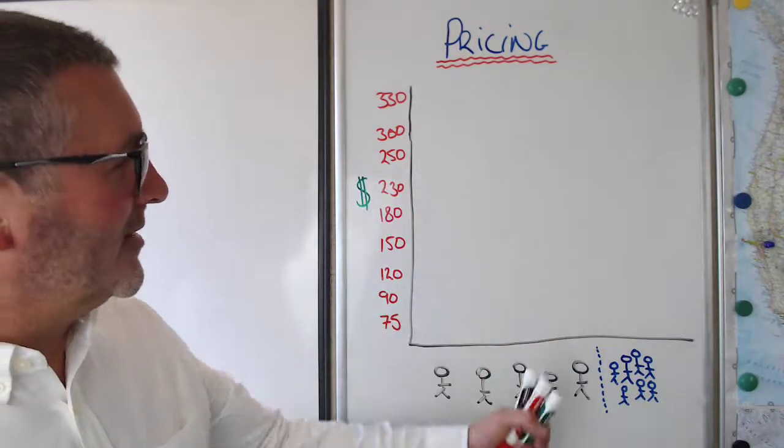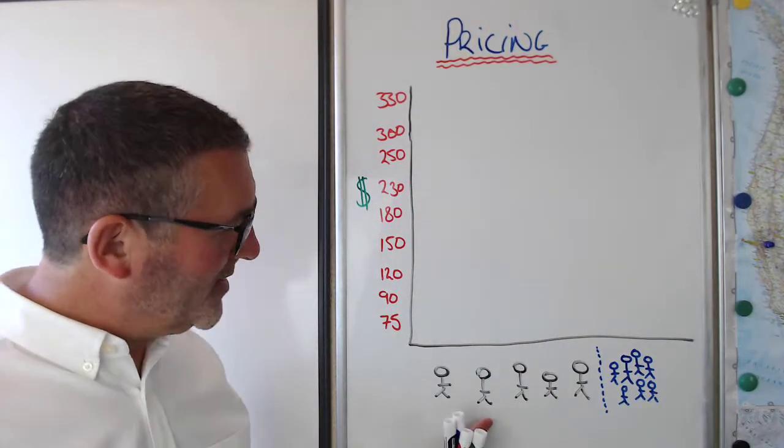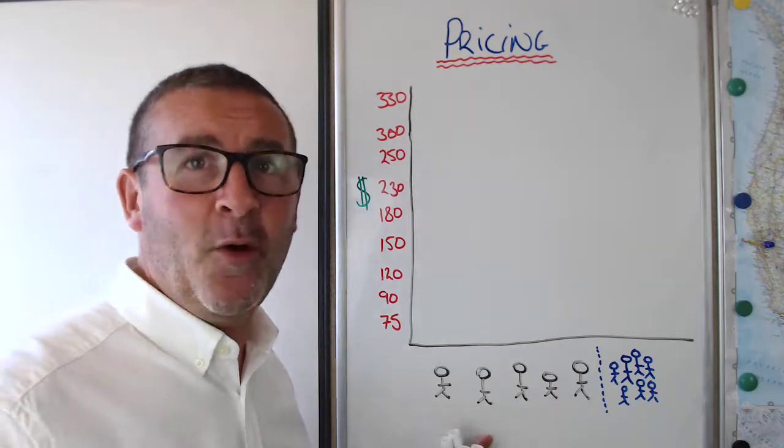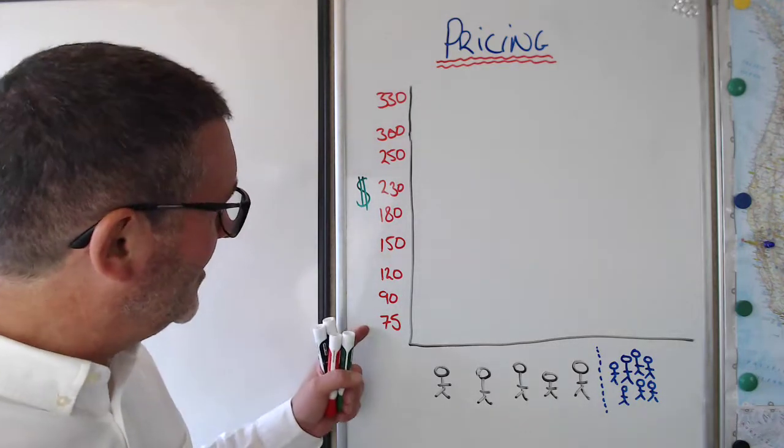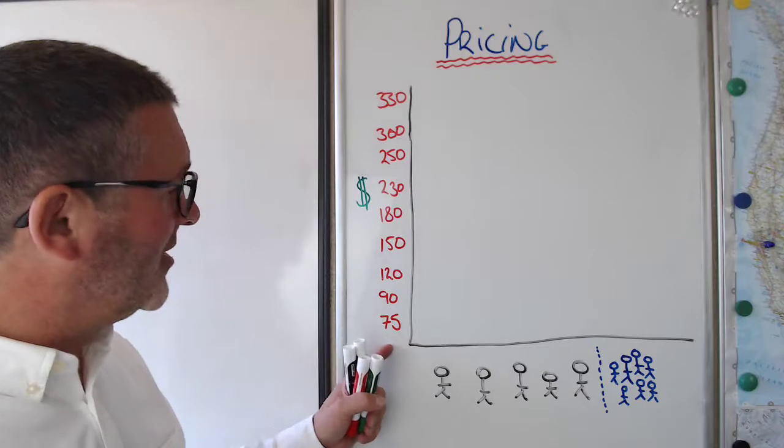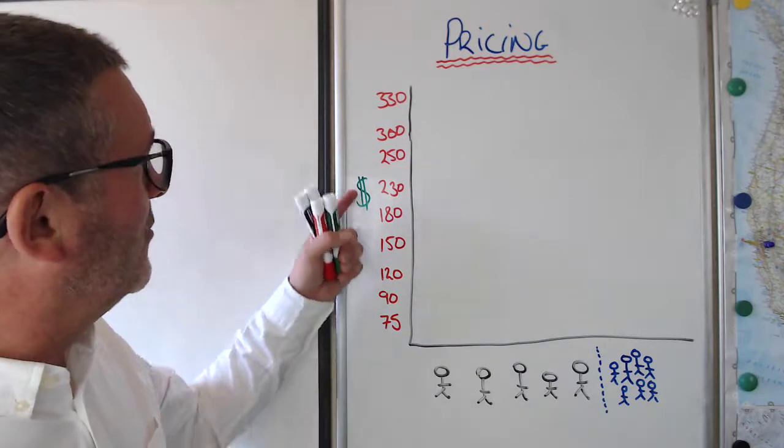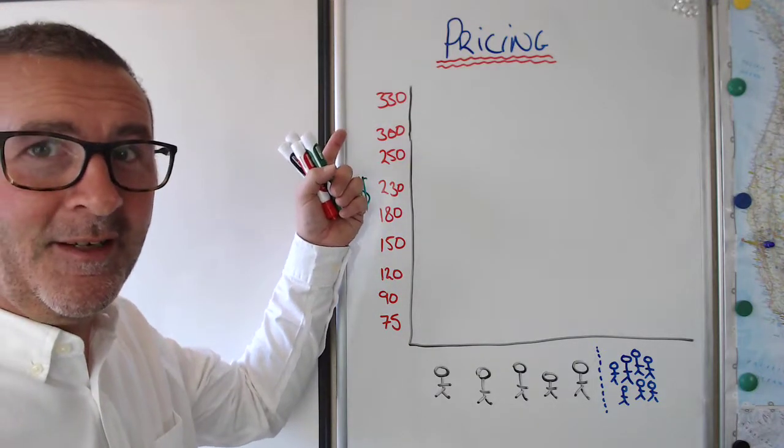So this is a market. These are business owners down here. So this would be you and your competitors. And this is your hourly rate, your billable hour. So it starts at $75, goes up right up to $330.